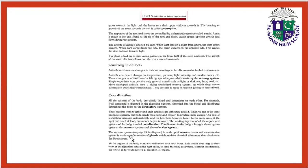The nervous system is made up of nervous tissues, and the endocrine system is made up of a number of glands which produce chemical substances that circulate in the bloodstream. All the organs of the body work in coordination with each other, meaning they do their work at the right time and at the right speed to serve the body as a whole.